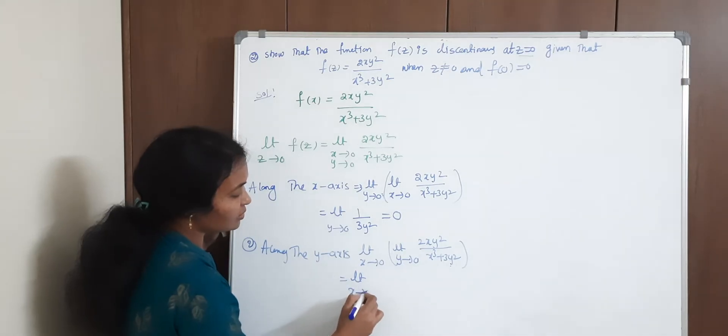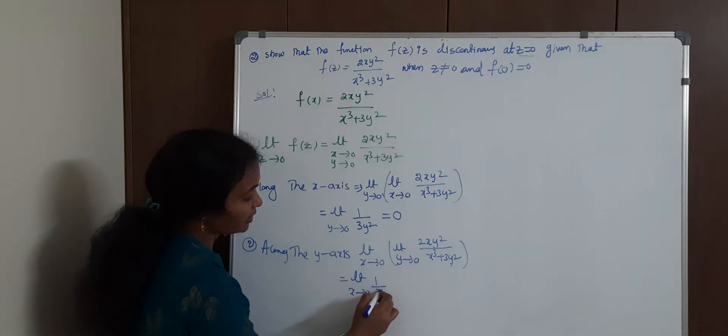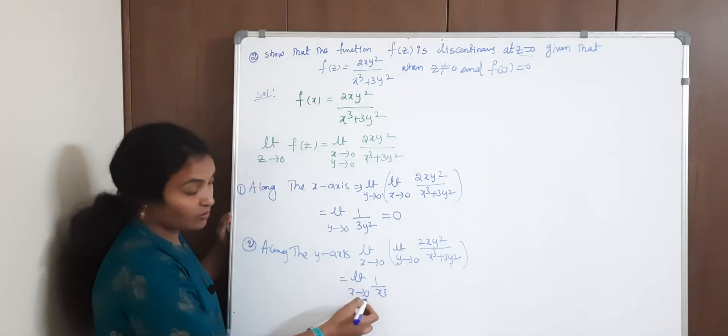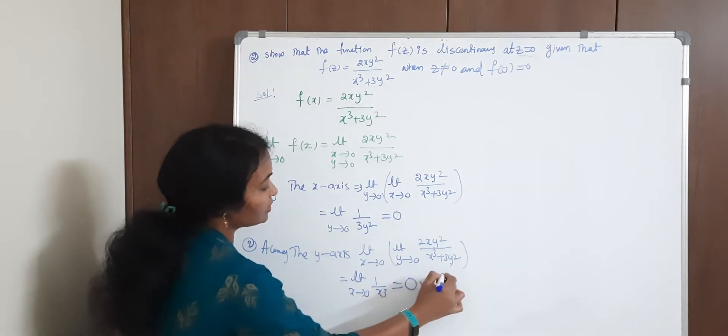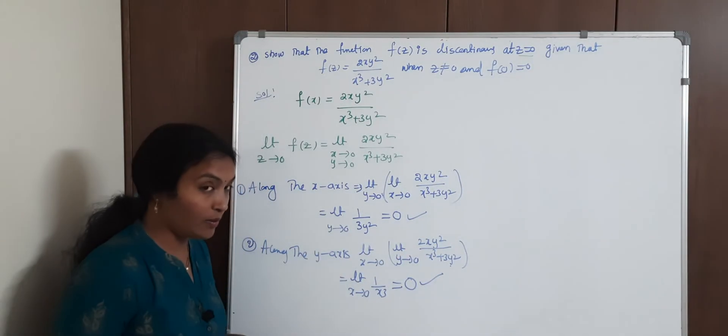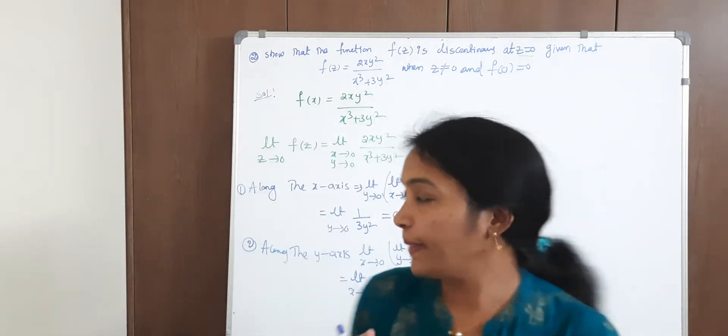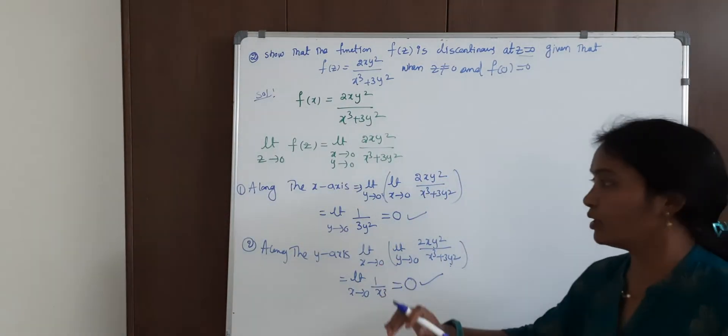What is the remaining here? Limit x→0, 1/x³. When x→0, this will also become 0. Okay, so x-axis is 0, y-axis is 0.